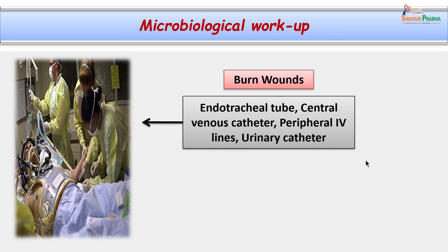The fever continued, he developed leukocytosis, went into hypovolemic shock, and his condition started to deteriorate. The patient was exposed to many sources of microorganisms because he had an endotracheal tube in place, a central venous catheter, and peripheral intravenous lines.